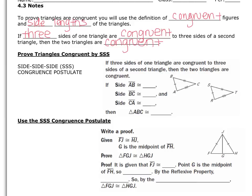SSS is basically a shortcut. Previously, triangles were proven congruent because all sides and all angles were the same. Now we're saying all you need is three sides — if all three sides are the same, it has already been proven that the angles are also the same. So side-side-side is enough to prove that the entire triangle is congruent to the other.